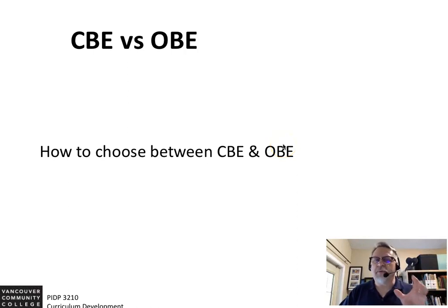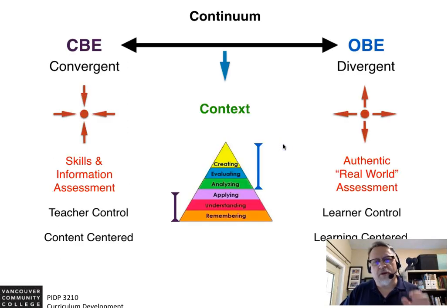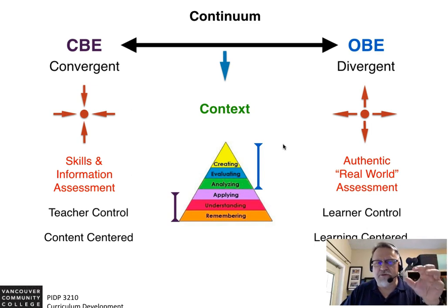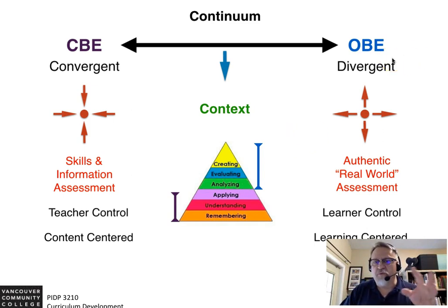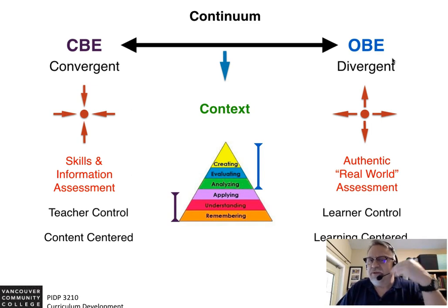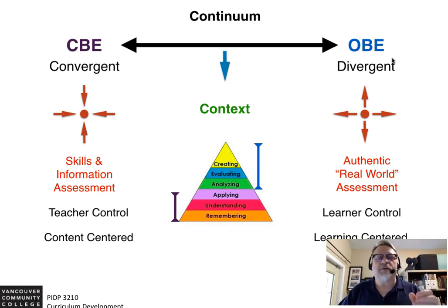How does one choose between competency-based and outcomes-based education? If we take a look at our continuum, competency-based education is focusing on skills, information, and assessments — it's usually content-centered. On the other side, outcomes-based education deals with authentic, real-world learning opportunities and assessment, and it's much more learning-centered.